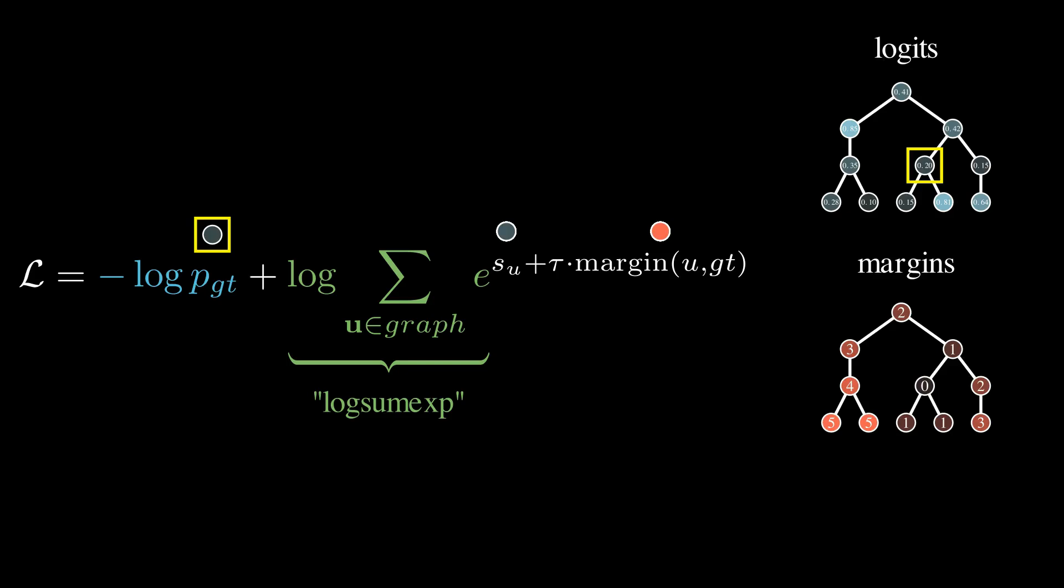This is how our choice of the margin will determine how the output structure is enforced. The small tau term is just here for scaling the margin, as it might have a very different range of values.